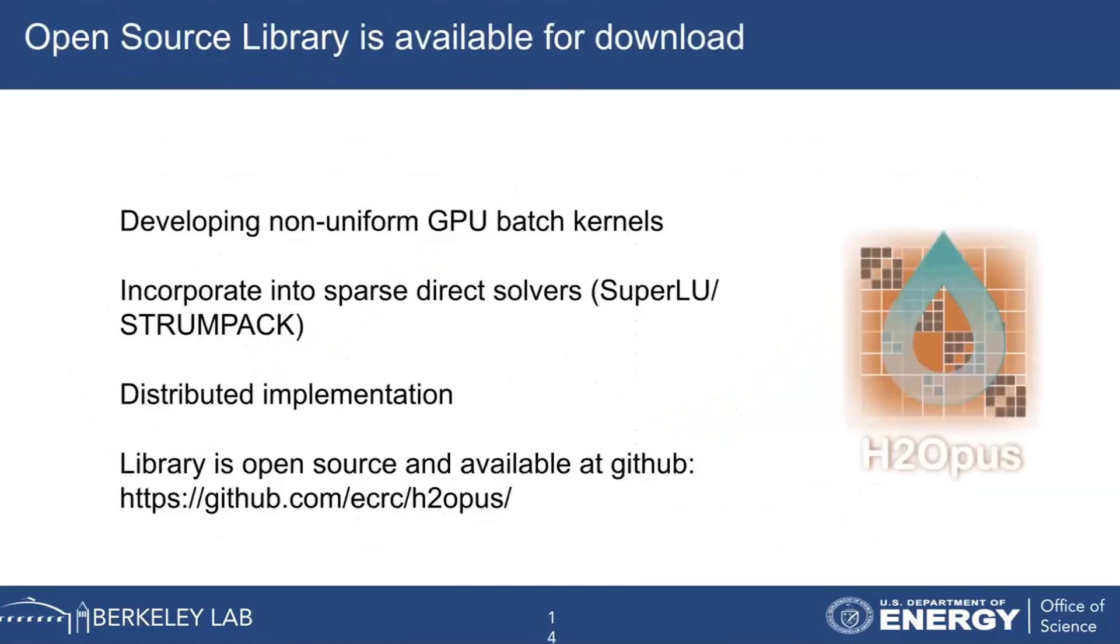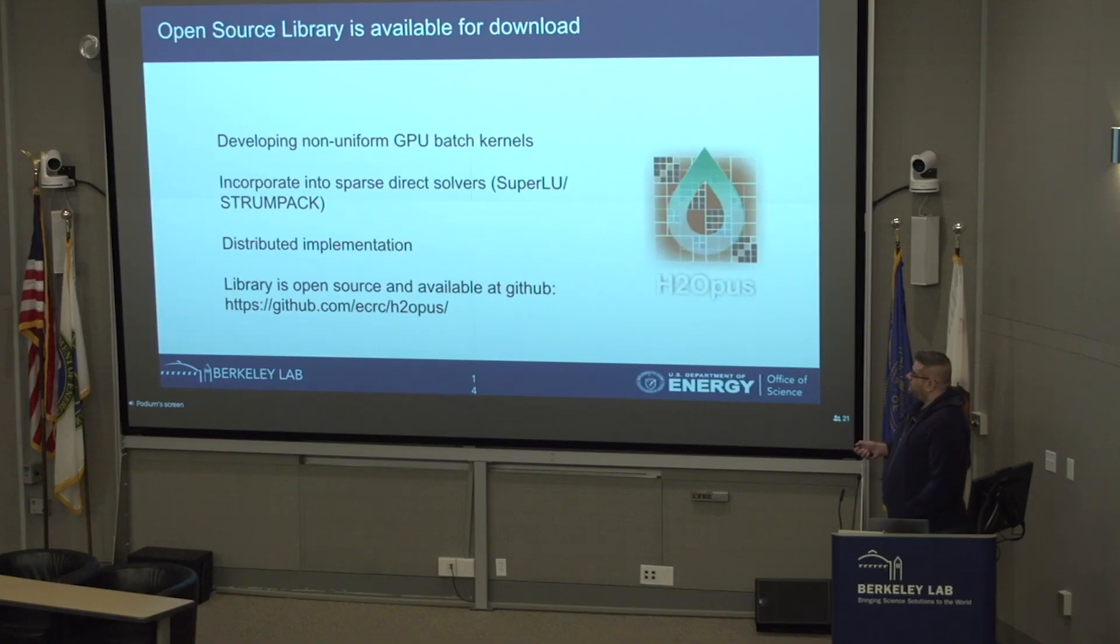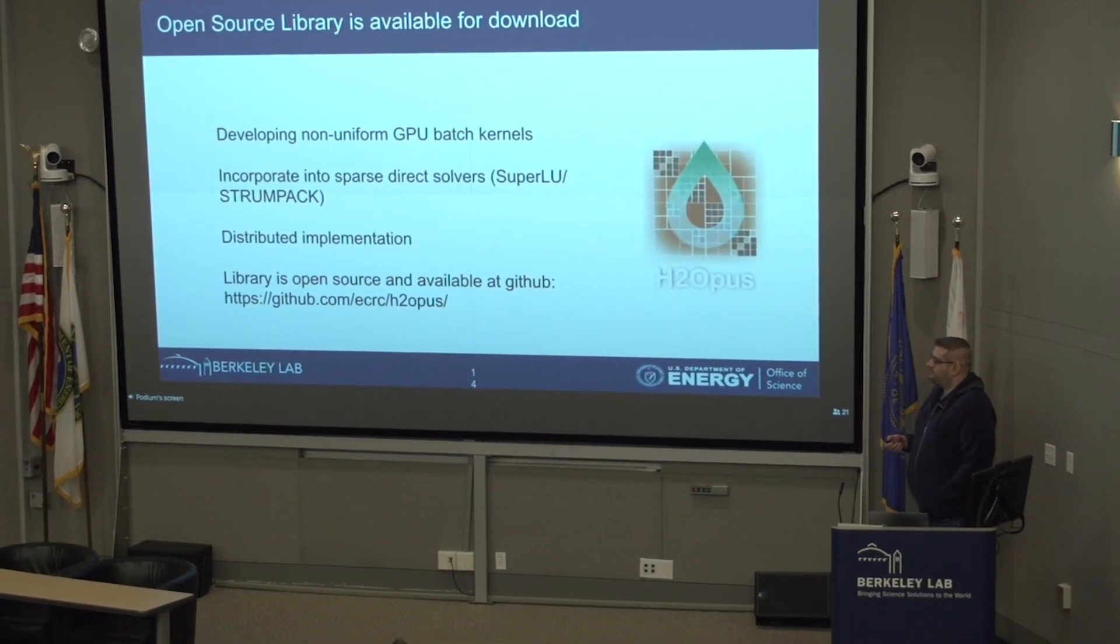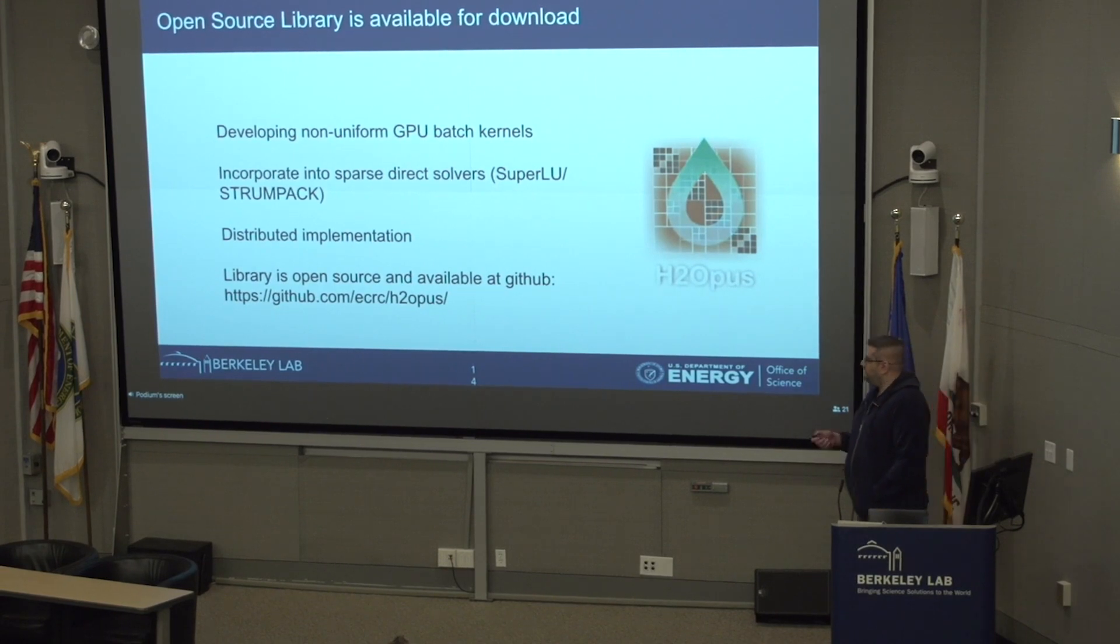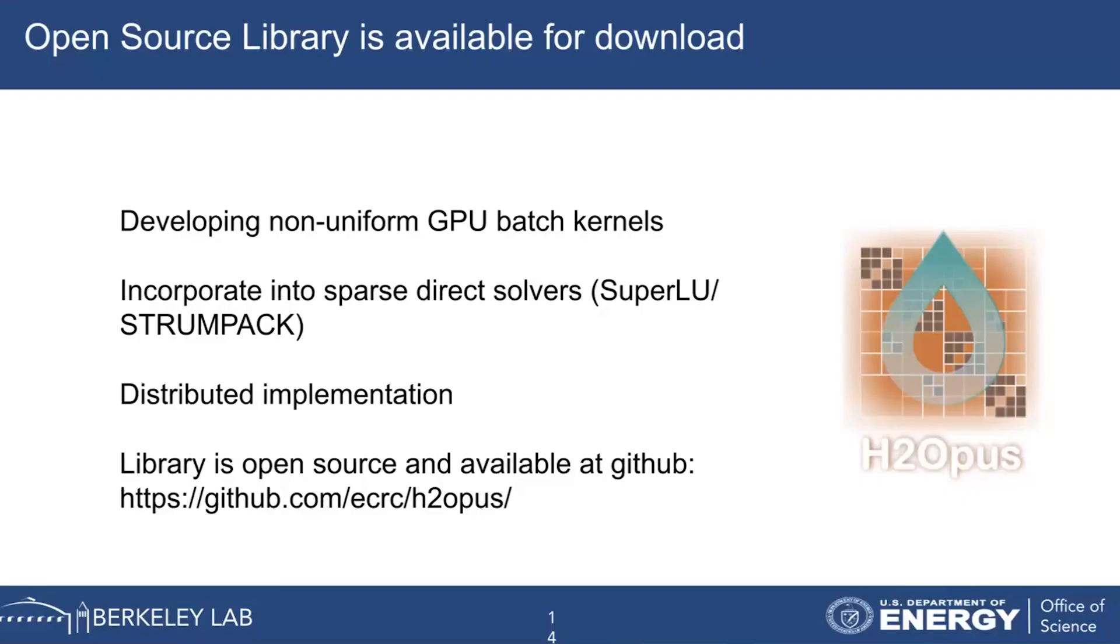The work that we've done is available online. It's an open source library called H2 Opus. We're currently working on developing non-uniform GPU batch kernels. We're relying on magma for some of them, but some of them need to be developed by ourselves. We're going to incorporate this into sparse direct solvers like SuperLU and Strumpac and get things distributed so that we can solve larger and larger problems. If you'd like to check out the library, this is the URL. It has publications that you can check to see other algorithms that are available within the library. Thank you.